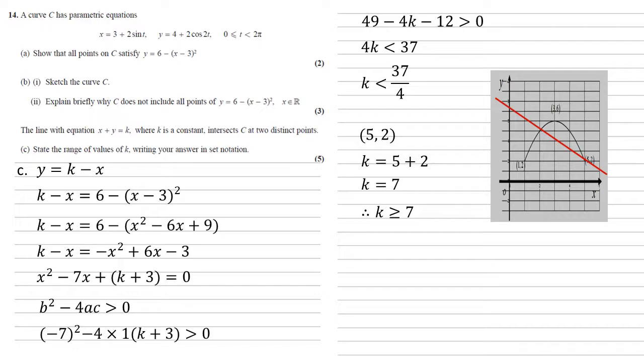So we've got smaller than 37 over 4, larger than or equal to 7. Putting this into set notation gives us the range of values for k is equal to brackets k, colon k, larger than or equal to 7, smaller than 37 over 4.